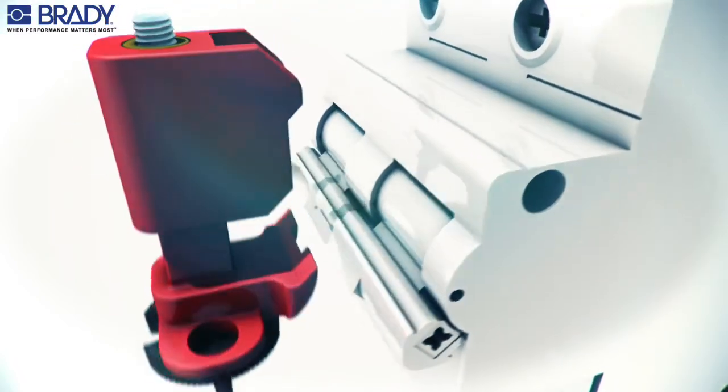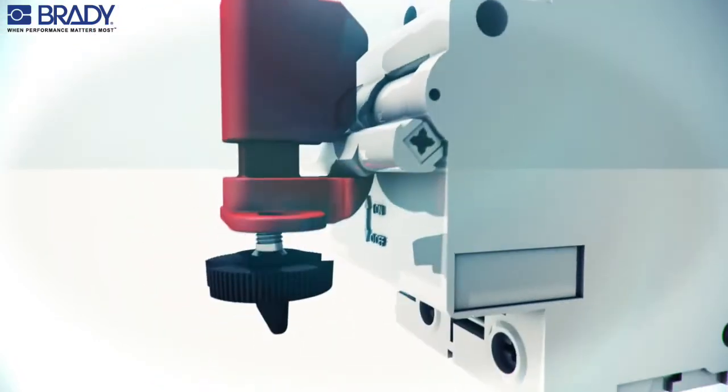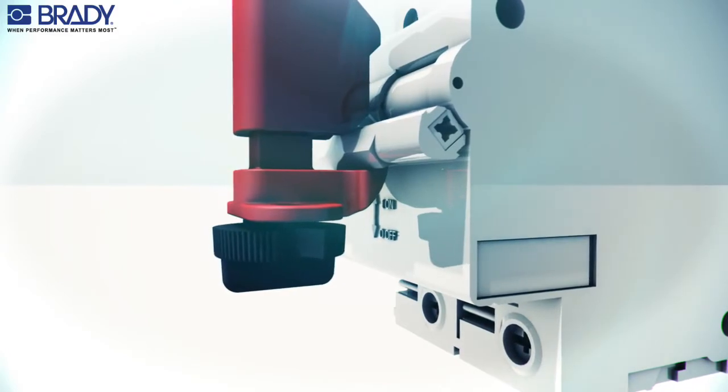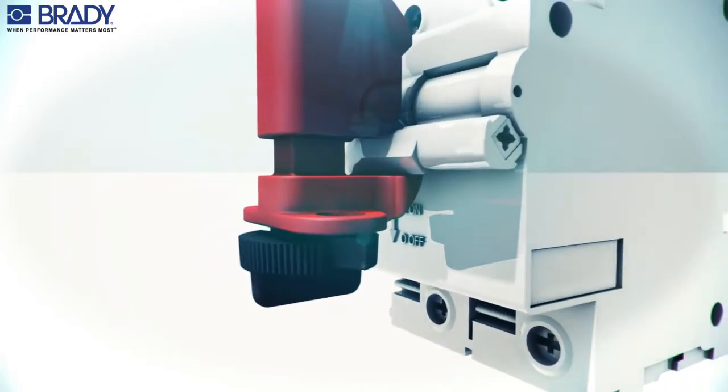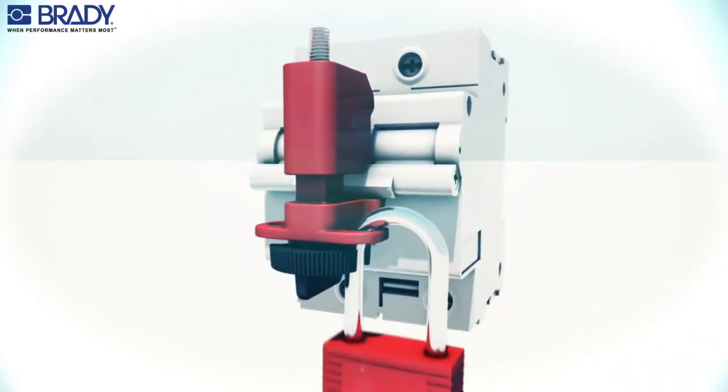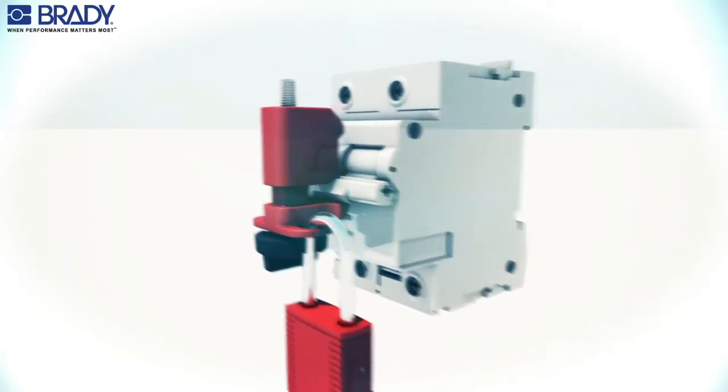For the tie bar method, place the circuit breaker in the off position. Put the metal clip under the tie bar and between the poles. Rotate the thumb wheel clockwise to secure the lockout device to the circuit breaker. Insert the padlock through the hole to secure the device in the lock position.